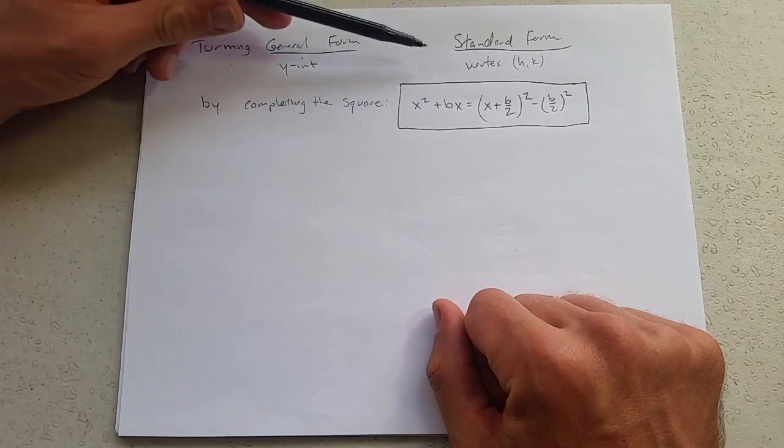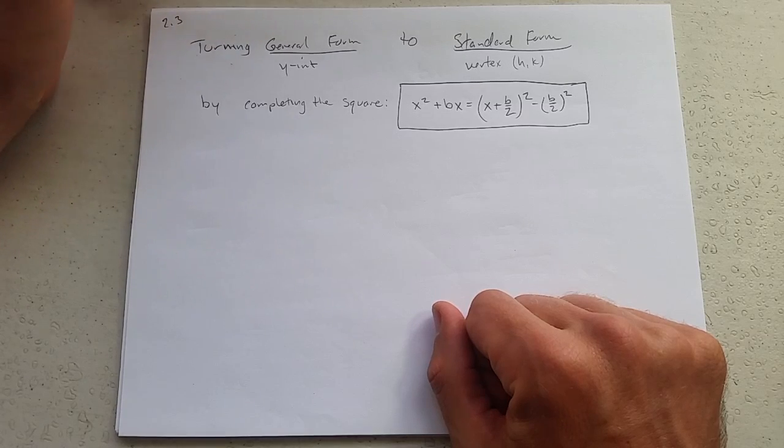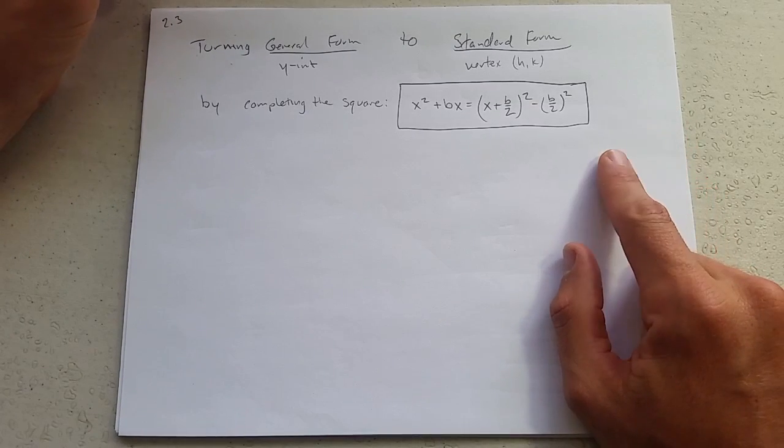So how do you turn general form to standard form? Very carefully. So we're going to go with completing the square.